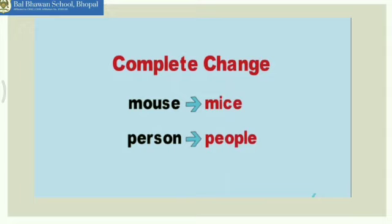And in some words there is a complete change of spelling. For example, mouse will turn to mice. Person becomes people. So the plural of person is people, which is totally changed.